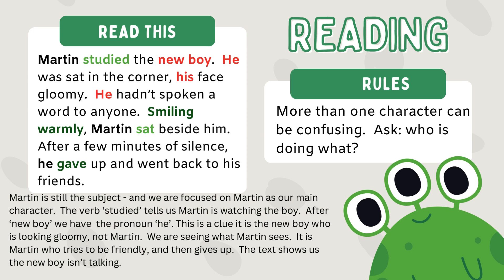'Smiling warmly, Martin sat beside him.' Well, the new boy isn't going to suddenly start smiling warmly. And so Martin, who was our main character from the beginning, is the subject again here doing the action. Smiling warmly is Martin, and Martin sat beside him — and 'him,' well, the only other person we've referred to is the new boy. So Martin sat beside the new boy.